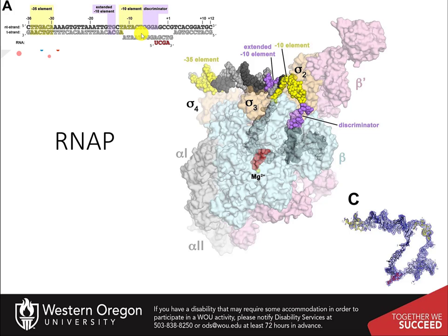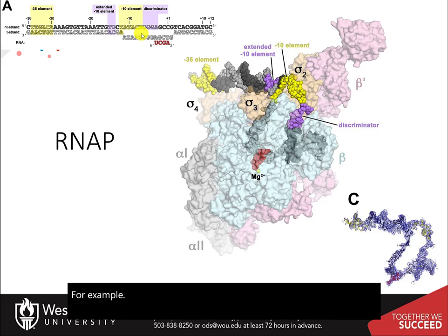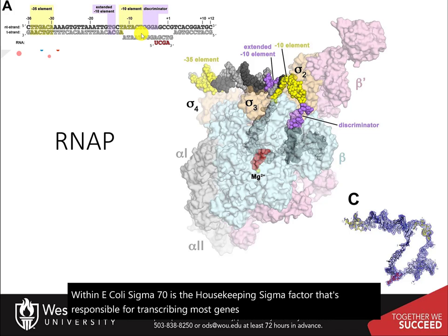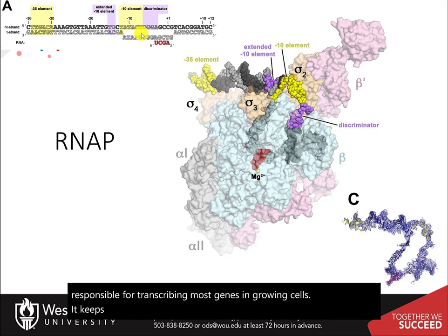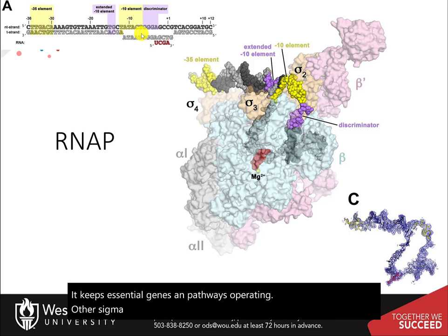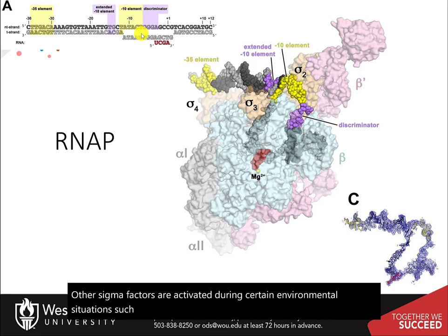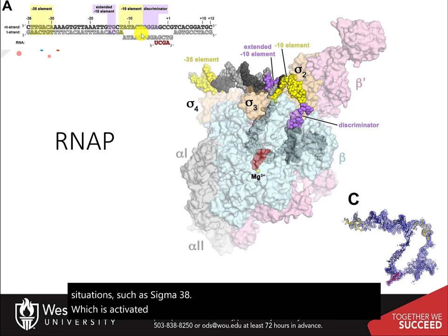For example, within E. coli, sigma-70 is the housekeeping sigma factor responsible for transcribing most genes in growing cells. It keeps essential genes and pathways operating. Other sigma factors are activated during certain environmental situations, such as sigma-38, which is activated during starvation or when cells reach the stationary phase.